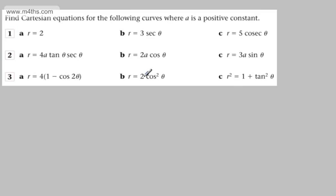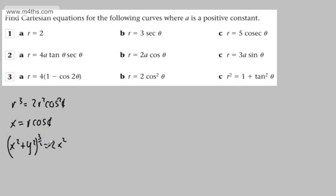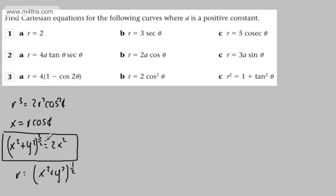For r equals 2 cos²theta, multiply through by r squared to get r cubed equals 2 r² cos²theta. Since x equals r cos theta, we have r cubed equals 2x². Writing r cubed as (x²+y²)^(3/2), we get (x²+y²)^(3/2) equals 2x².